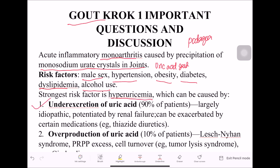The first reason is under-secretion of uric acid — this can occur due to an idiopathic cause, renal failure where the kidney cannot excrete uric acid, or overuse of medications called thiazide diuretics.